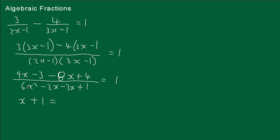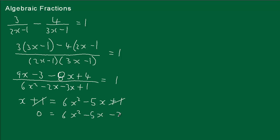Now we'll simplify the denominator and move it to the top. We have 6x squared — there's no other x squared — so that stays. Minus 2x and minus 3x gives minus 5x, and plus 1. We've got a plus 1 on both sides, so we take minus 1 from both sides — they cancel. So x equals 6x squared minus 5x. Bringing x to the other side: 0 equals 6x squared minus 5x minus x.